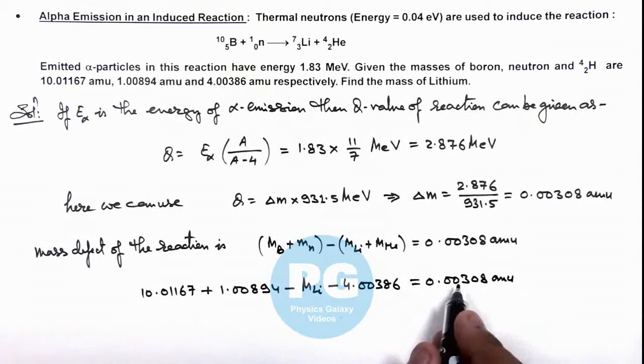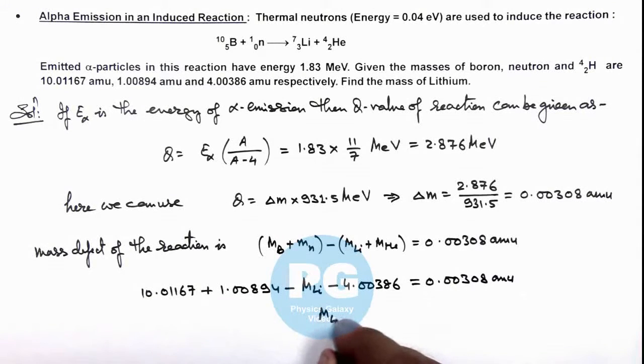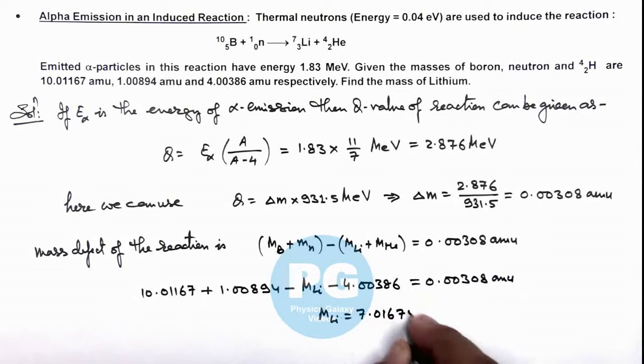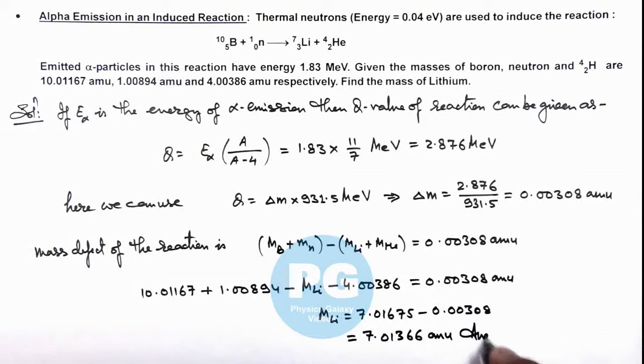If we take all other terms on the right hand side, we get the mass of lithium that is 7.01675 minus 0.000308, and that is equal to 7.013666 amu. That is the final result of this problem.